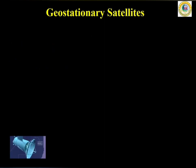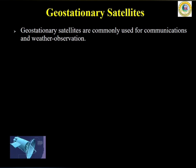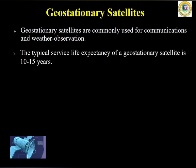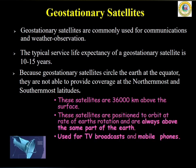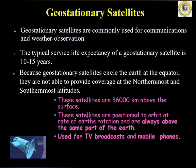Geostationary satellites are commonly used for communication and weather observation. The typical service life expectancy of such satellites is nearly 10 to 15 years. Because geostationary satellites encircle the globe at the equator, they are not able to provide coverage at the polar regions. These satellites are 36,000 kilometers above the surface, positioned to orbit at the rate of earth's rotation and always above the same part of the earth. They are hugely used for broadcasting — TV broadcast and also in mobile communication networks.